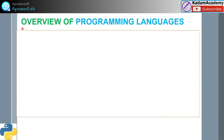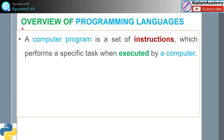Now for an overview of programming languages. A computer program is a set of instructions which performs a specific task when executed by a computer.